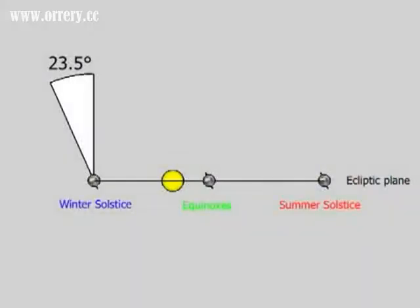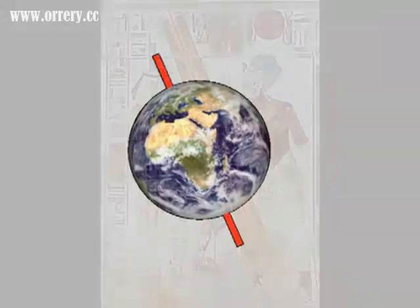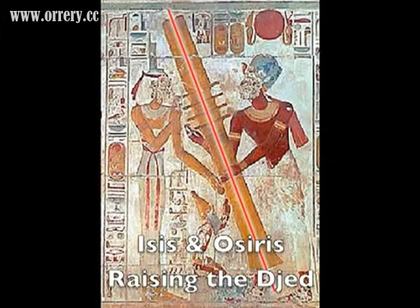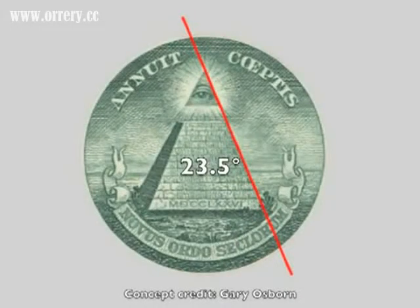The Earth's equator is tilted some 23.5 degrees with respect to the ecliptic. Gary Osborne's fascinating paradigm shift website shows how the angle of the Earth's tilt is symbolized in art. Here are Isis and Osiris raising the jed, which amazingly matches the angle of the Earth's tilt. And here again the 23.5 degree angle matches the slope of the pyramid on the dollar bill. Osborne has found this same angle symbolized in many other pieces of esoteric art.